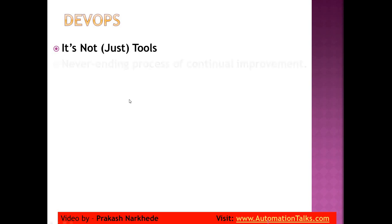DevOps is a never-ending process for continuous improvement. Just as in Agile, we learn from previous things and continuously seek feedback so we can proceed further. DevOps is essentially continuous integration — and I will be talking about that in detail in my next session.